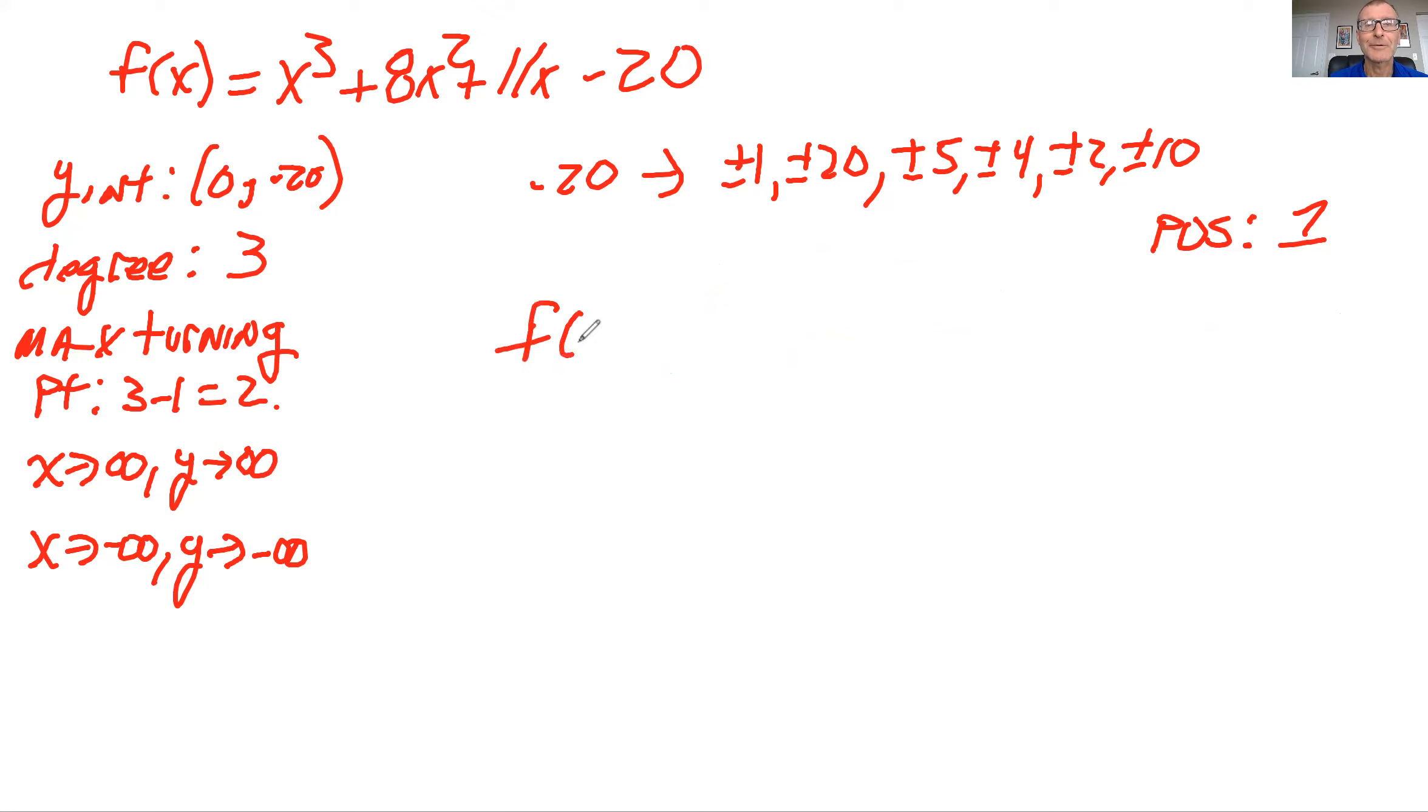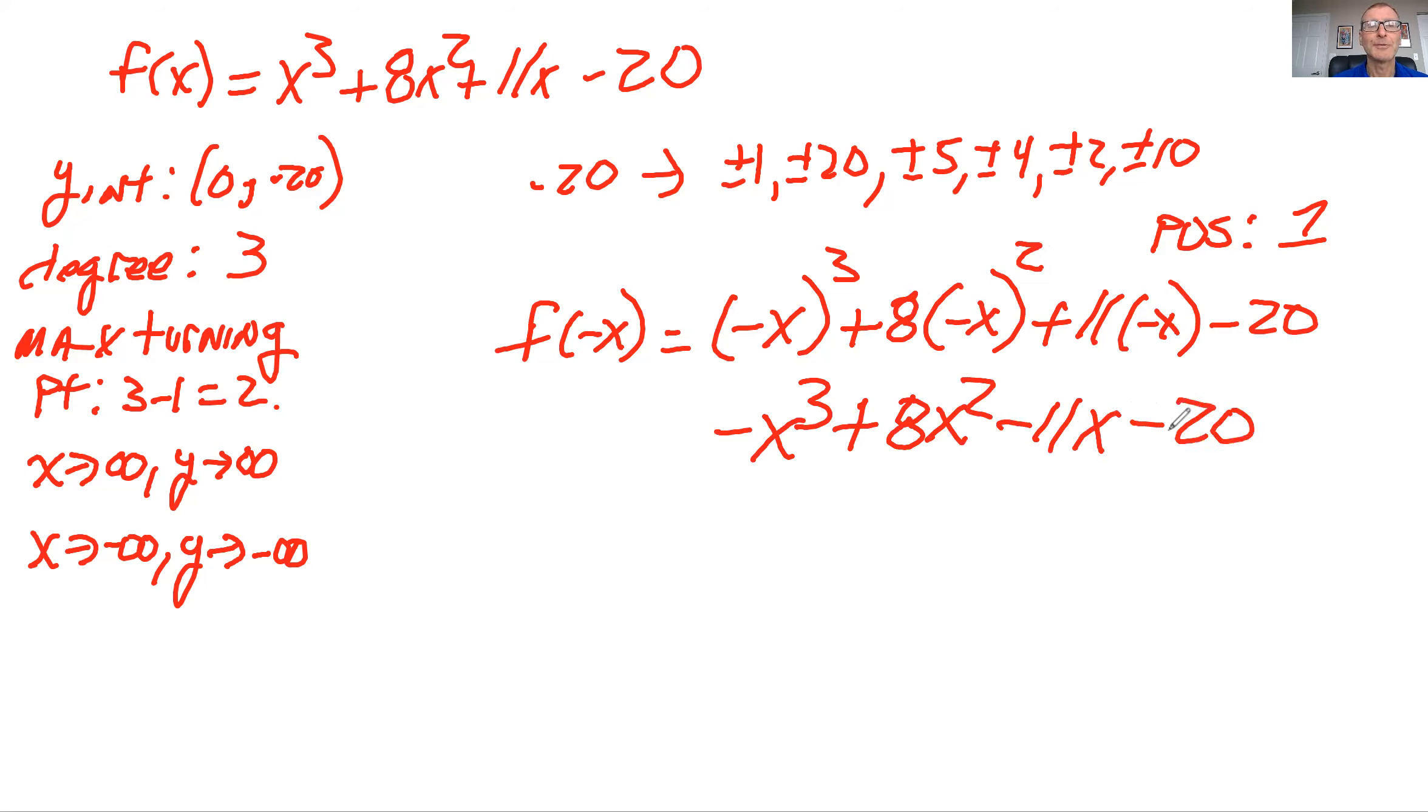So now we do the negative real zeros. So we have to do this transformation. And we just plug in minus x wherever we see x. So this would be minus x cubed. This would be plus, right? We have two minuses. We have one minus. And we have one minus. When we do this, sign change, sign change, no sign change. So we have two sign changes. So there's two or two minus two, which is zero. So the negative real, there's either a possibility of two or zero negative real zeros.